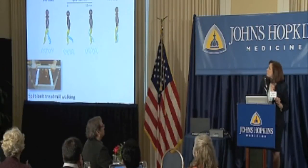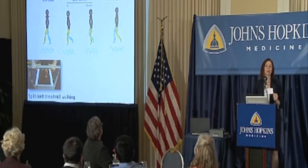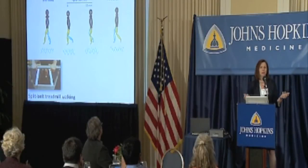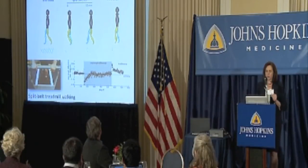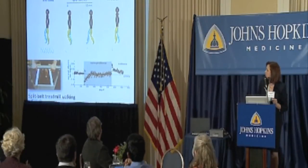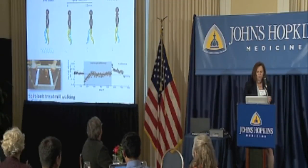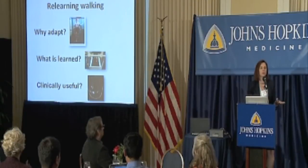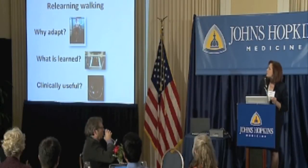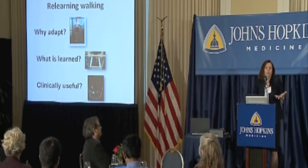When you go back to the regular treadmill, they have to unlearn this pattern and they limp in the other direction — and people are always surprised, even when I tell them they're going to limp. Down here is a plot showing the difference in step length size — zero means the steps are even. During this kind of learning it takes on the order of a couple hundred steps to learn the pattern, and then you have to actively unlearn it when you go back to a regular treadmill. I'll tell you about three quick experiments: why would you adapt in the first place, what exactly are you learning, and whether this is clinically useful.